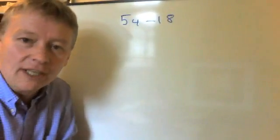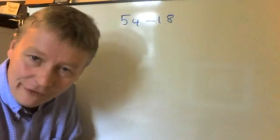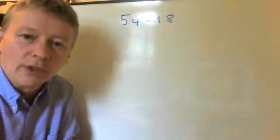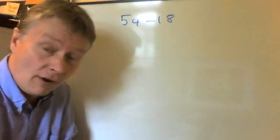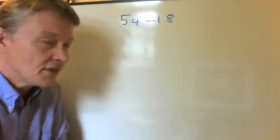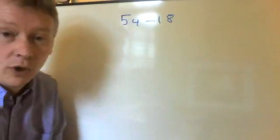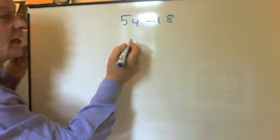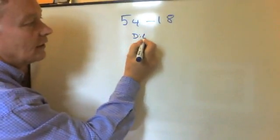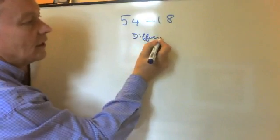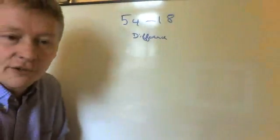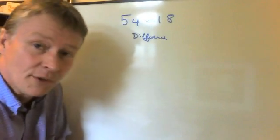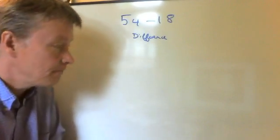What subtraction means is the difference between the two numbers. Because we're more used to counting on, it's easier for us to start at 18 and work up to 54 in order to calculate the difference between the two numbers. So 54 take away 18 is the same as saying what's the difference between 54 and 18.